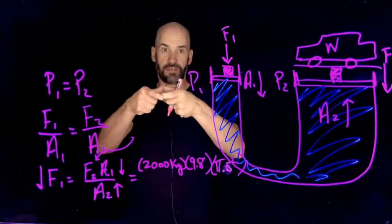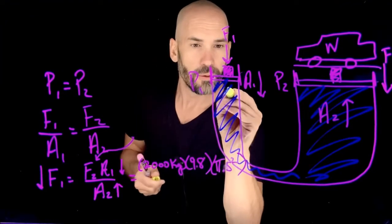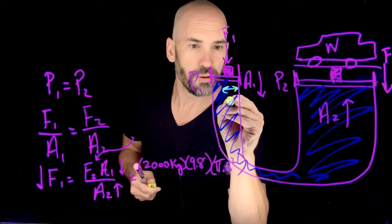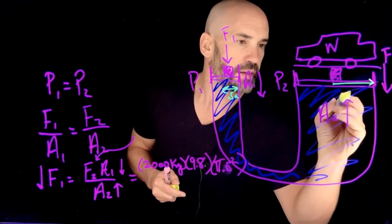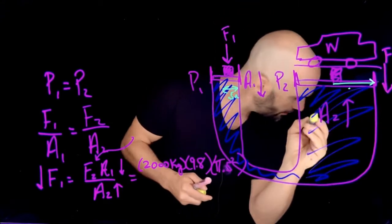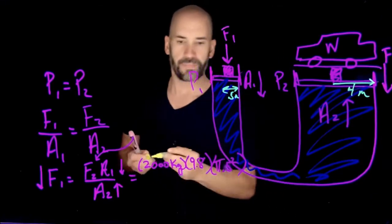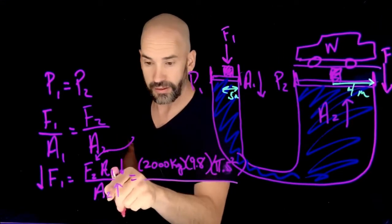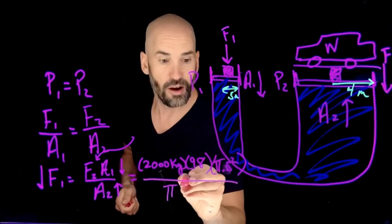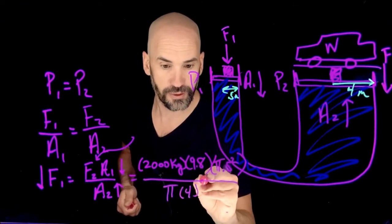It's a half a meter radius. 0.5 meters. And I'm saying that this radius here is 4 meters. All right. So that would mean that down here, this area is pi r2 squared, but that's 4 meters, so that's pi times 4 squared.